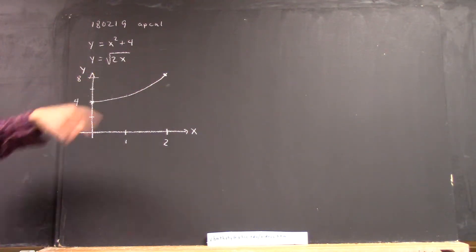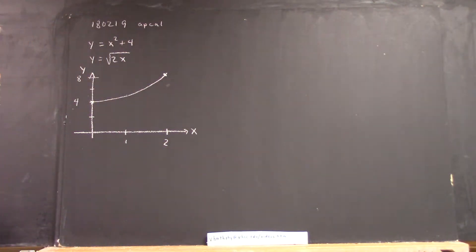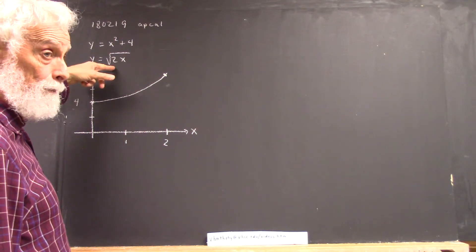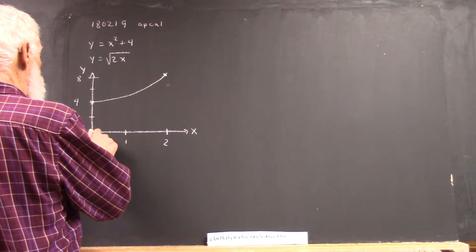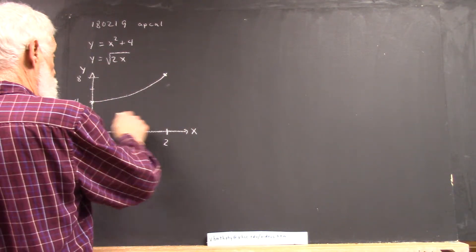Now, y equals square root of 2x. If x equals 4, or x equals 2, what do we get? 2, right? So we know we're going to go from 0, because when x is 0, naturally you're going to get 0, up to value 2.